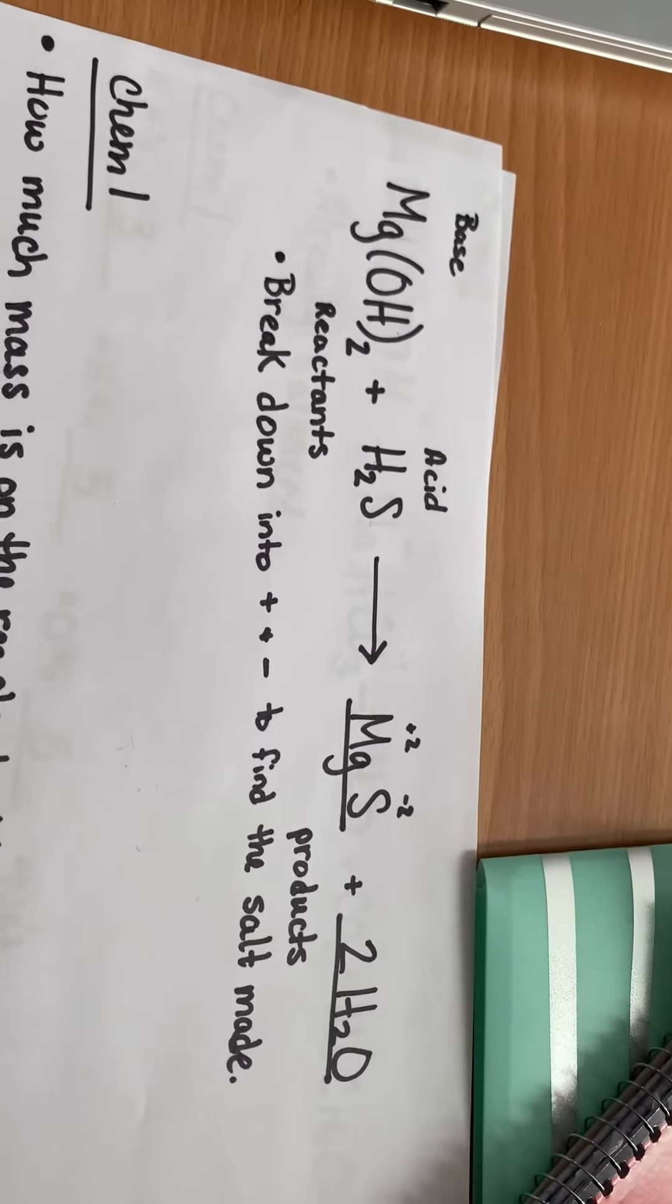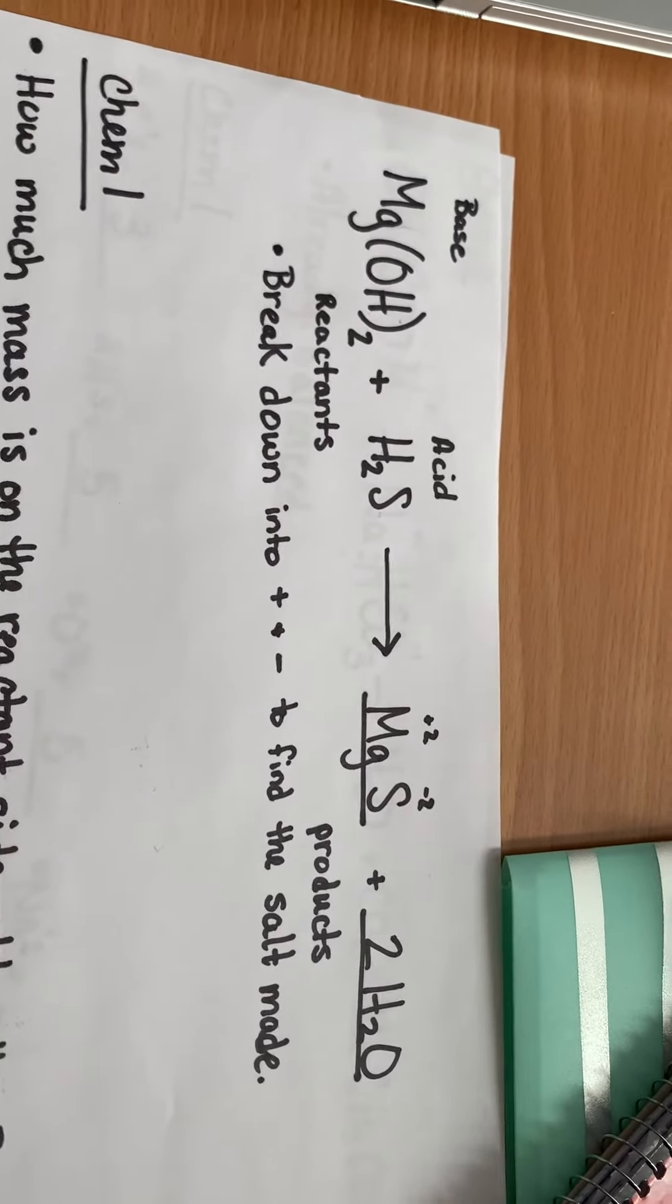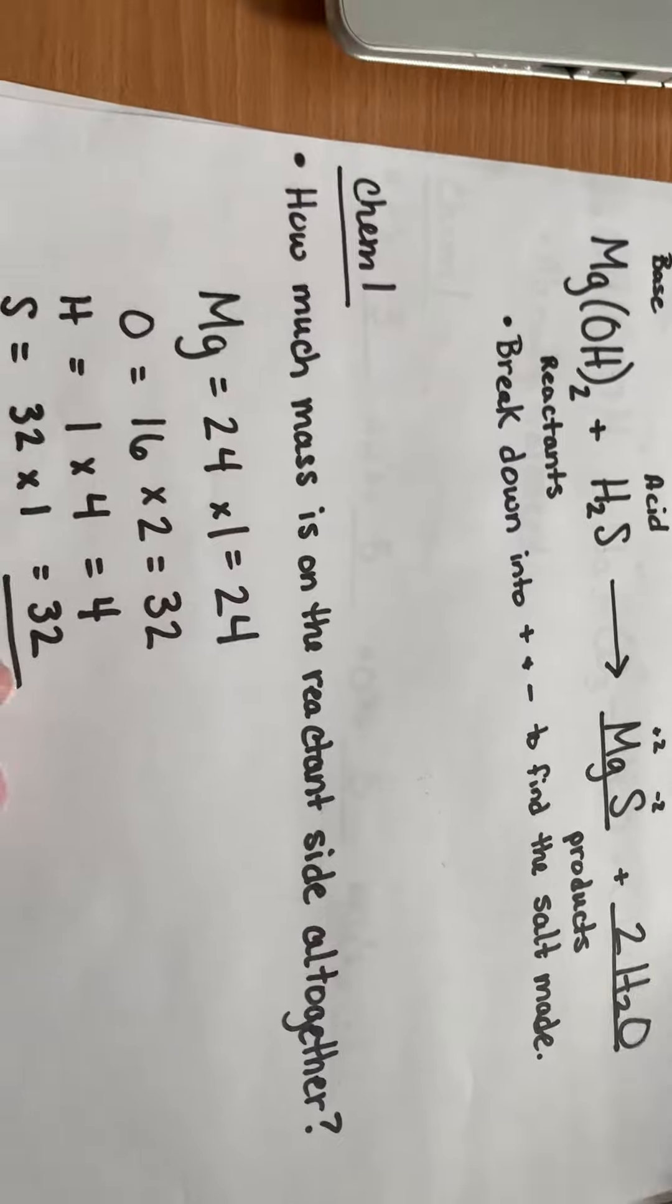So that is the whole breakdown of how to balance and solve for that acid and base. Now, Chemistry 1, I asked you guys just to figure out how much mass was on the reactant side altogether.